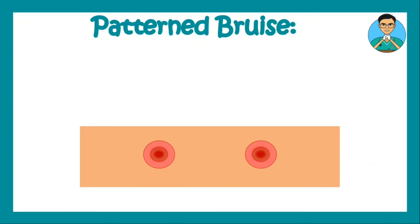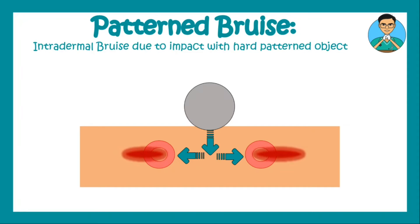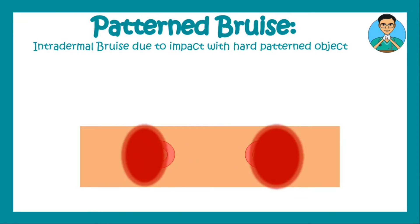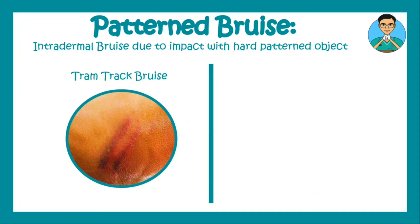There are certain types of bruises known as pattern bruises, which appear due to impact with a hard patterned object. For example, if somebody strikes you with a stick, the stick imparts force or pressure that gets transmitted sideways onto the blood vessels, causing extravasation of blood in a centrifugal fashion. This gives rise to bruising, and this type of patterned bruise is known as a tram track bruise.